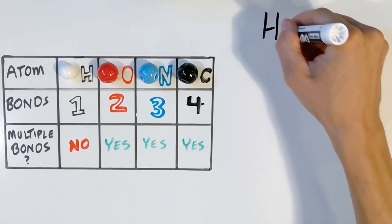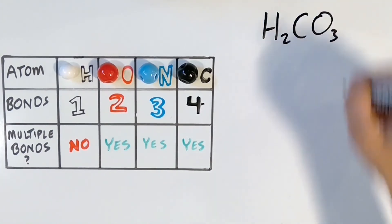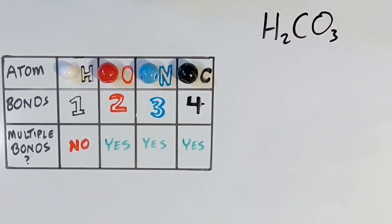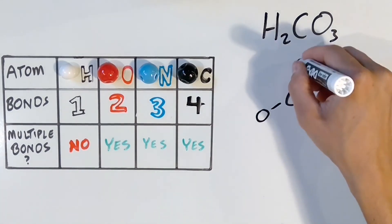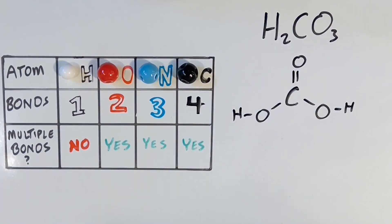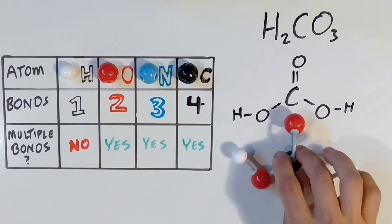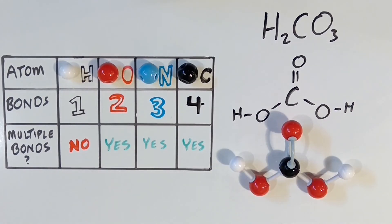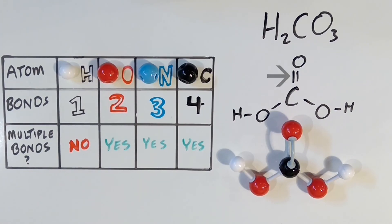This is the molecular formula for a chemical called carbonic acid, H2CO3. Pause the video and see if you can determine how this molecule is put together. Carbonic acid is built like this. This molecule also obeys our rules — each hydrogen is bonded one time, each oxygen has two bonds. These oxygens have single bonds, while this one has a double bond. Finally, the carbon has four bonds total: one double bond and two single bonds.